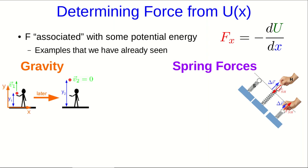In the case of gravity, if I set y to be positive up, then the gravitational potential energy is mgy. If I take the derivative of that with respect to y, I can get the y component of the gravitational force, and it comes out as -mg, exactly what it should be.